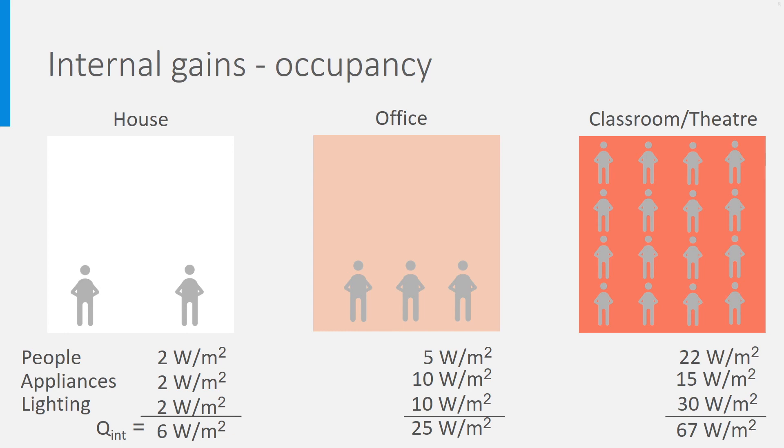Depending on the density of occupancy, this will cause more or less internal heat. For instance, houses are generally not densely populated, by which the rate of heat production by people is around 2 W per square meter floor area. In an office building, it would be more around 5 and in a classroom, around 22 W per square meter.